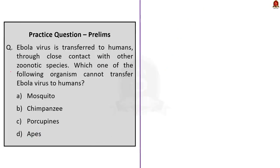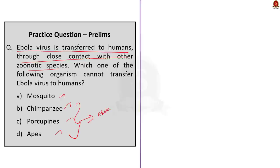Question four: Ebola virus is transferred to humans through close contact with other zoonotic species. Which one of the following organisms cannot transfer Ebola virus to humans? Option A: Mosquito. Option B: Chimpanzee. Option C: Porcupines. Option D: Apes. As we saw in our discussion, chimpanzees, apes and porcupines all have the ability to transfer Ebola virus to humans. According to the WHO website, forest antelopes also transmit Ebola virus to humans. From the options given, only mosquito cannot transfer Ebola virus to humans. The correct answer is option A, mosquito.